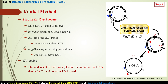Step 1: the dUTP process. M13 DNA containing the target sequence to be mutated is placed into a bacterial strain that lacks uracil DNA glycosidase enzyme. This strain is normally known as ung-negative and dut-negative strain. Bacteria lacking dUTPase accumulate dUTP nucleotide, while bacteria lacking uracil DNA glycosidase are unable to eliminate the incorporated uracil that becomes part of the new DNA strand. As a result, the plasmid DNA contains uracil instead of thymine nucleotides.